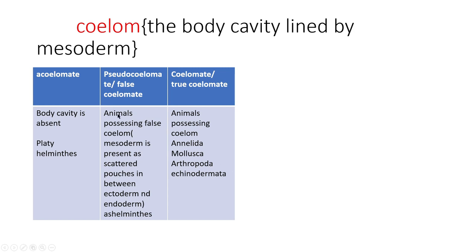The false coelom is called pseudocoelom. In pseudocoelomates, the mesoderm is present as scattered pouches rather than a complete lining around the body cavity.